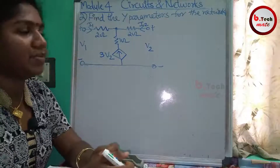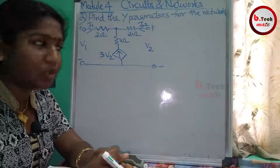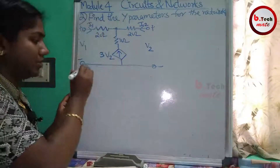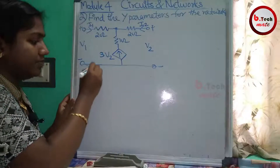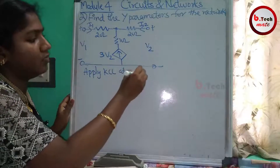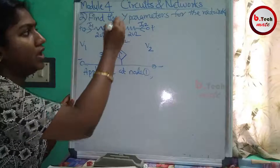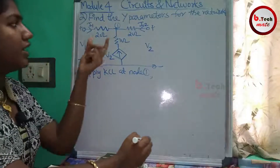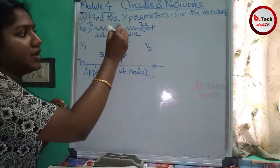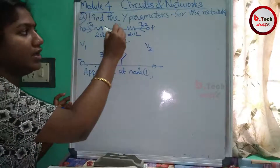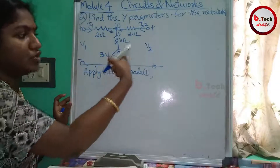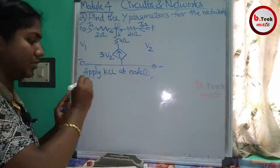We will analyze this type of problem. In this case, we have a node and we apply KCL at that node. We will consider the outgoing currents at node 1, accounting for the dependent current source term 3V2.